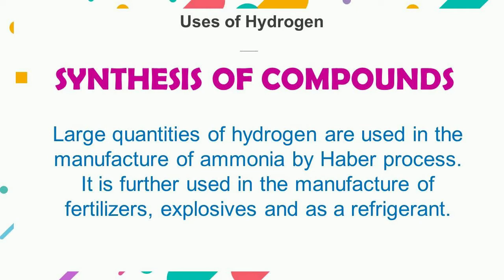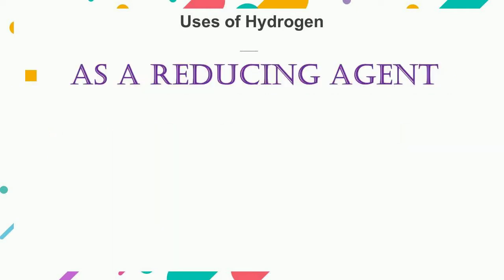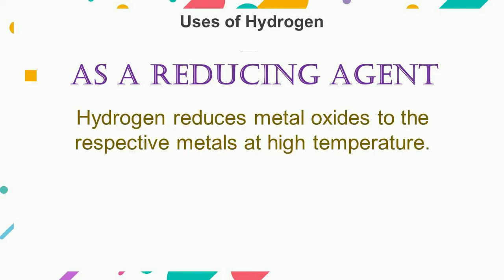Hydrogen also acts as a strong reducing agent. For example, hydrogen reduces metal oxides to the respective metals at high temperature. When hydrogen is passed over heated lead oxide, the lead oxide is reduced to lead.